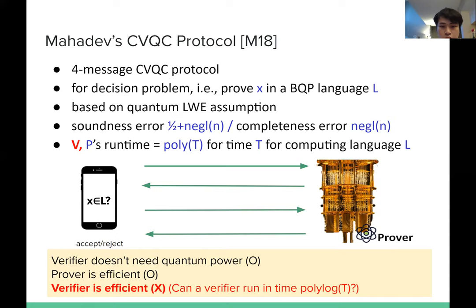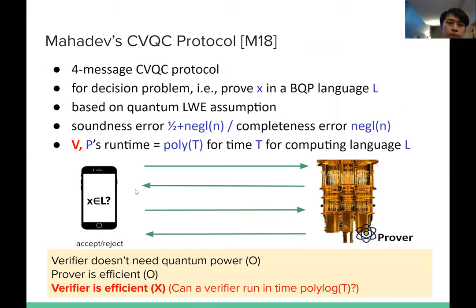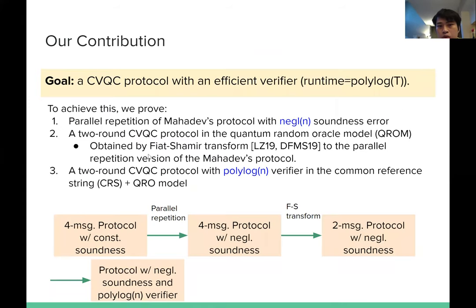This looks very good because the verifier doesn't need quantum power — check. And the prover is efficient, running in time polynomial in T — check. However, the verifier here is not that efficient because the verifier needs to run in time polynomial in T. In this work, we try to show that a CBQC protocol is efficiently verifiable. To achieve this, we prove: first, a parallel repetition of Mahadev's protocol with negligible soundness error; and then, we show there is a two-round CBQC protocol in the quantum random oracle model, obtained by Fiat-Shamir transform applied to the parallel-repetition version of Mahadev's protocol, where the quantum Fiat-Shamir transform is by Bilu, Jain, and Don et al. in 2019.